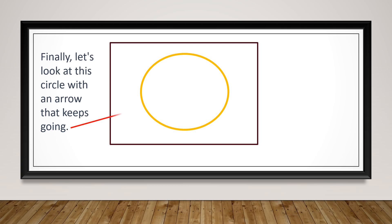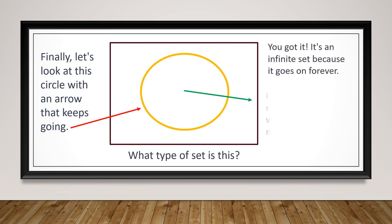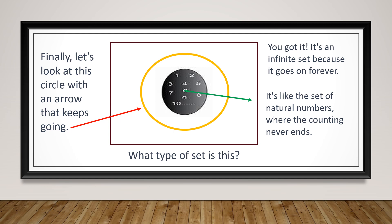Finally, let's look at this circle with an arrow that keeps going. What type of set is this? It's an infinite set because it goes on forever — it's like the set of natural numbers where the counting never ends. It never stops; you continue counting and counting.